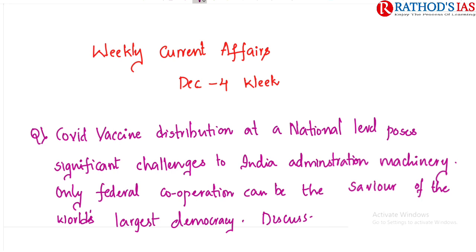I want to try to make this session more interactive, so let us start with a question. The question here is: COVID vaccine distribution at the national level poses significant challenges to India's administration machinery. Only federal cooperation can be the savior of the world's largest democracy — discuss.